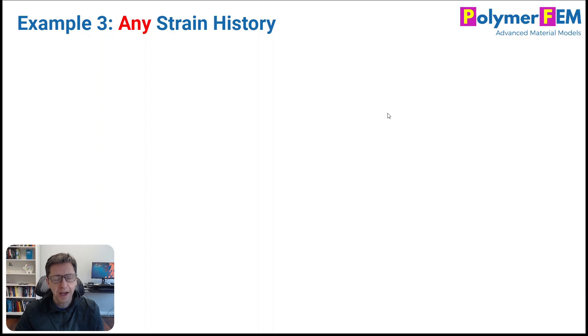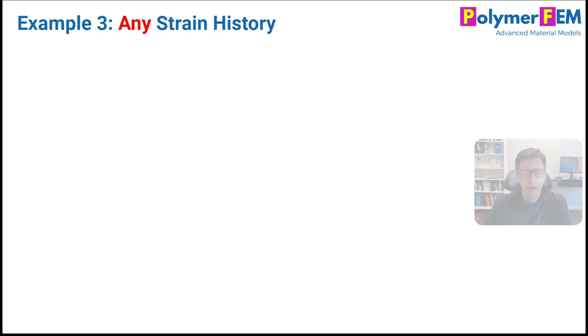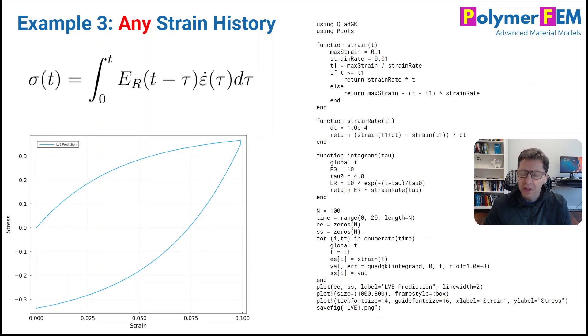My third and last example today is about how about any strain history? What if we have some more complicated load-unload situation? So in that case, you can't often do it in closed form. You need to solve it on a computer. But here is the master equation and some little bit of code in a mathematical language called Julia. I really like Julia as a language. It's free. It's fast. It's cool. You should check it out.